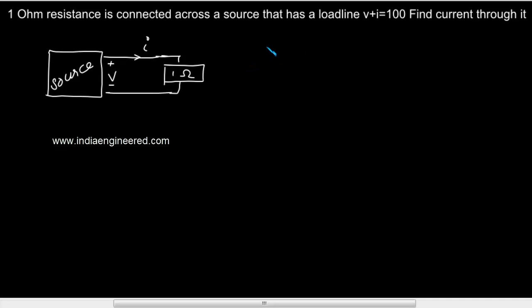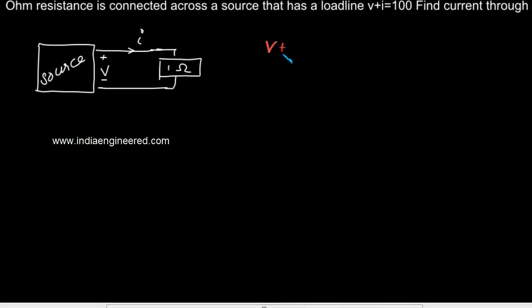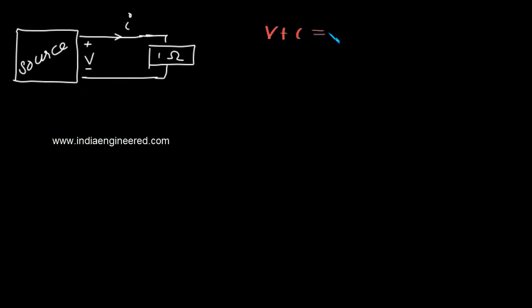It is given that V plus I equals 100. We are asked to find the current through it.